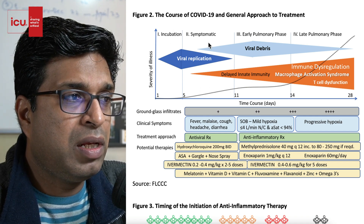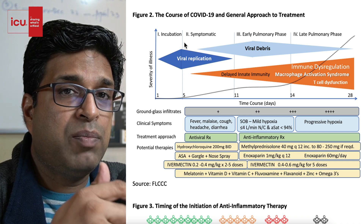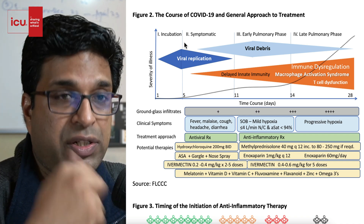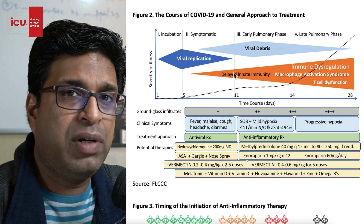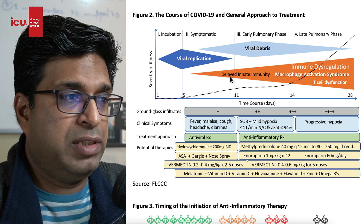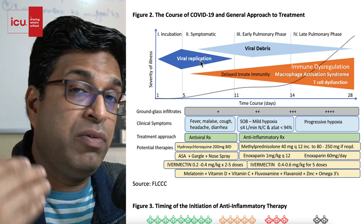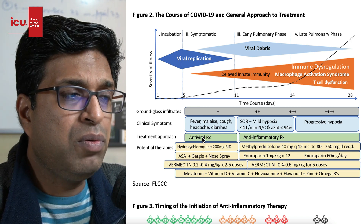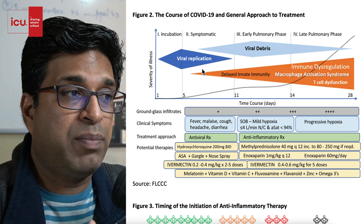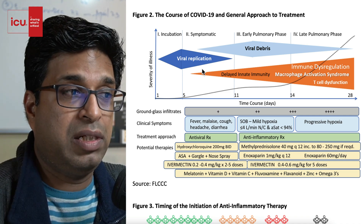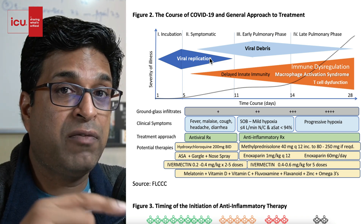In the viral replication phase, we should give antiviral therapy because viral replication is at its maximum and the body is trying to fight the infection. Viral replication is almost over by the end of the early pulmonary phase — somewhere around 9 to 11 days after symptom onset. Antiviral therapy given from symptom onset will be very effective. However, giving steroids during the viral replication stage will suppress the immunity the patient is developing, allowing viral replication to go unchecked — which can be detrimental.